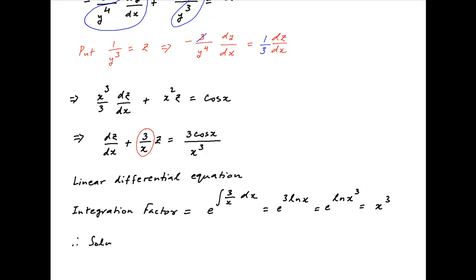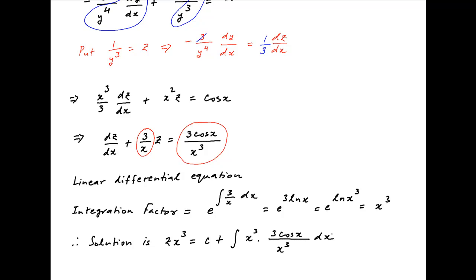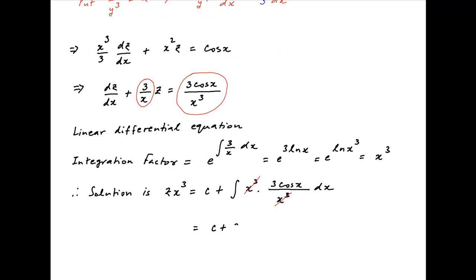Therefore, the solution of the linear differential equation is given by z times the integrating factor x cube is equal to the constant of integration plus integral of x cube times the right-hand side 3 cos x upon x cube dx. The right-hand side simplifies to c plus 3 times sin x, and the left-hand side is x cube times z, where z is equal to 1 upon y cube.